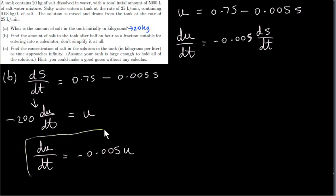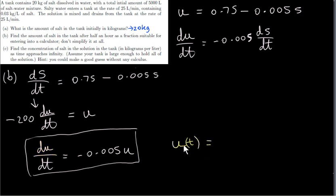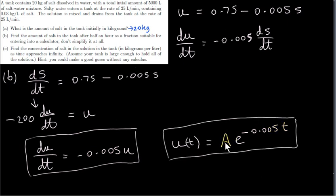This is a well-known differential equation. Its solution — where u is the dependent variable, u(t) to emphasize that u is a function of time — is given by a constant a multiplied by e to the power of minus 0.005 times t. This type of differential equation is worth remembering: its solution is an arbitrary constant times e to the power of the coefficient of u, which is minus 0.005 times t.